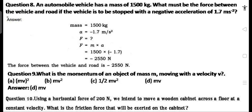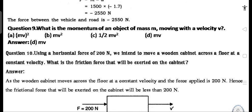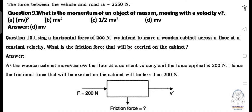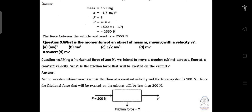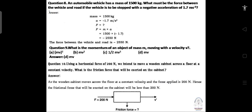Question 10: Using a horizontal force of 200 N, we intend to move a wooden cabinet across a floor at a constant velocity. What is the friction force that will be exerted on the cabinet? Answer: As the wooden cabinet moves at constant velocity with an applied force of 200 N, the frictional force exerted on the cabinet will be 200 N opposing the motion.